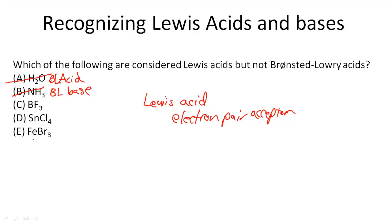Tin and iron are both transition metals, and transition metals can usually violate the octet rule because they have a d orbital and also a strong positive charge, so they can accept another electron pair. So BF3 can be a Lewis acid, and Sn and Fe can both be Lewis acids because they can accept electron pairs as transition metals.